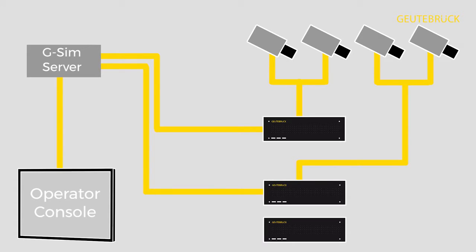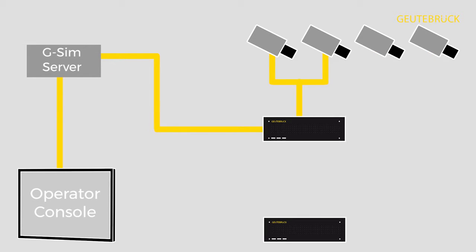Therefore, one or even more spare recorders will be added to the system and run without recording function. Once the recorder fails, G-SIM will immediately recognize it and activate one of these spare recorders.